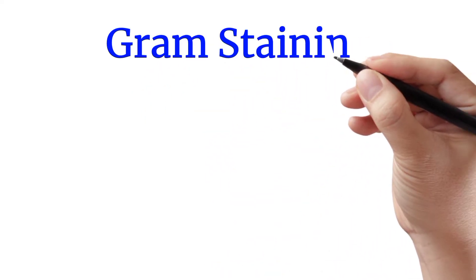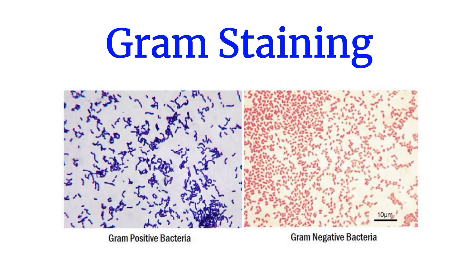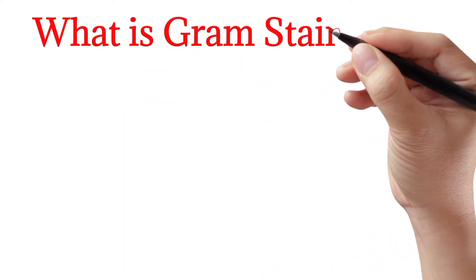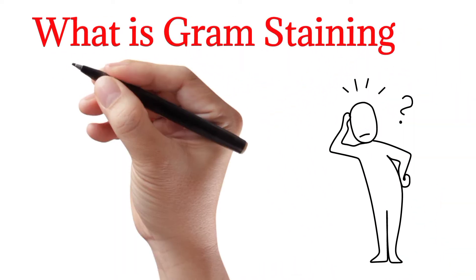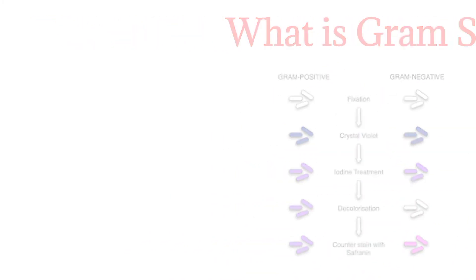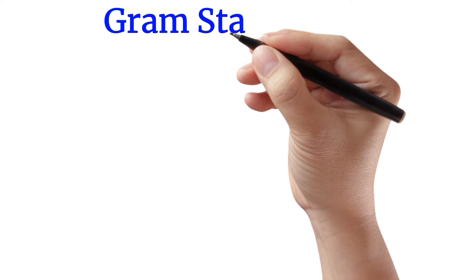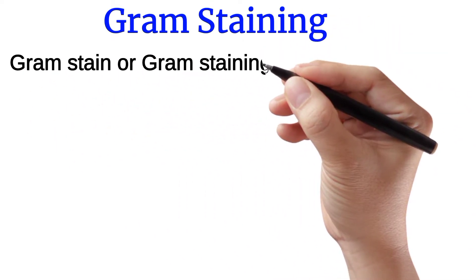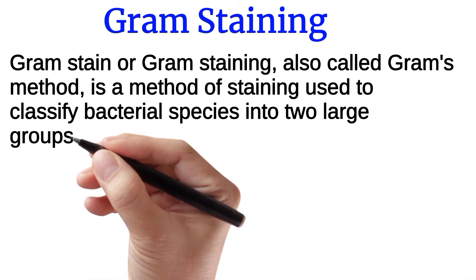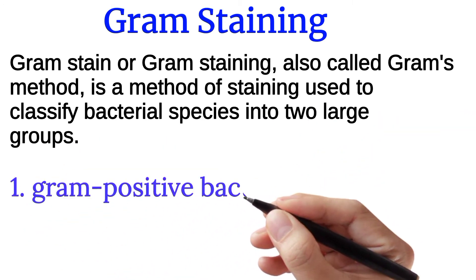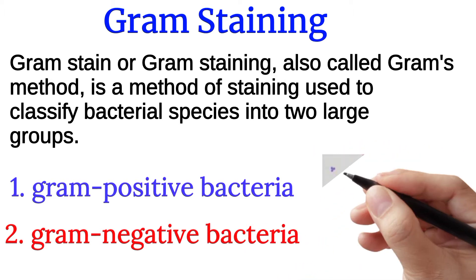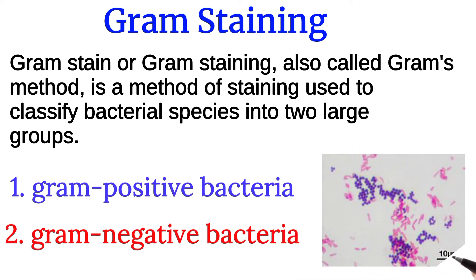Gram staining. What is Gram staining? Gram stain, or Gram staining, also called Gram's method, is the method of staining used to classify bacteria species into two large groups: Gram positive bacteria and Gram negative bacteria. Here is the diagram of Gram staining.